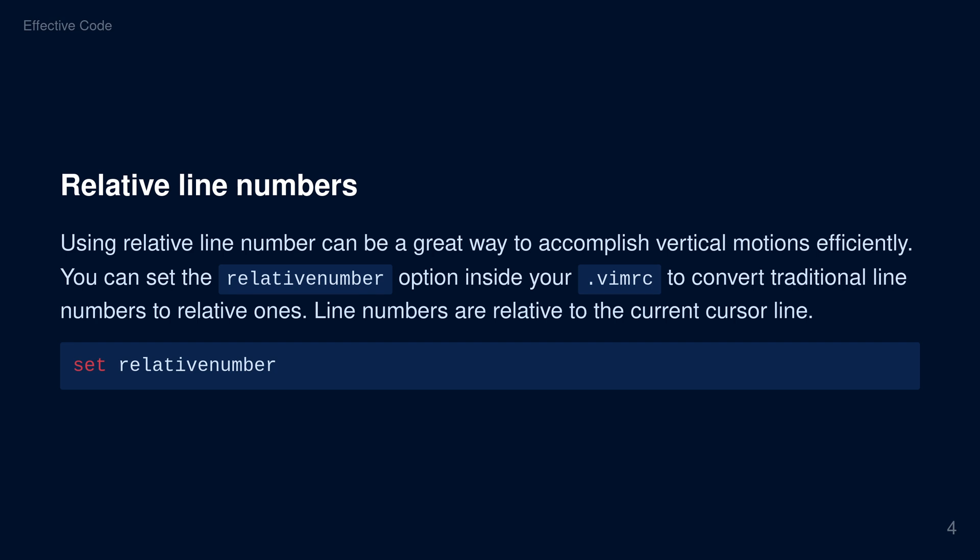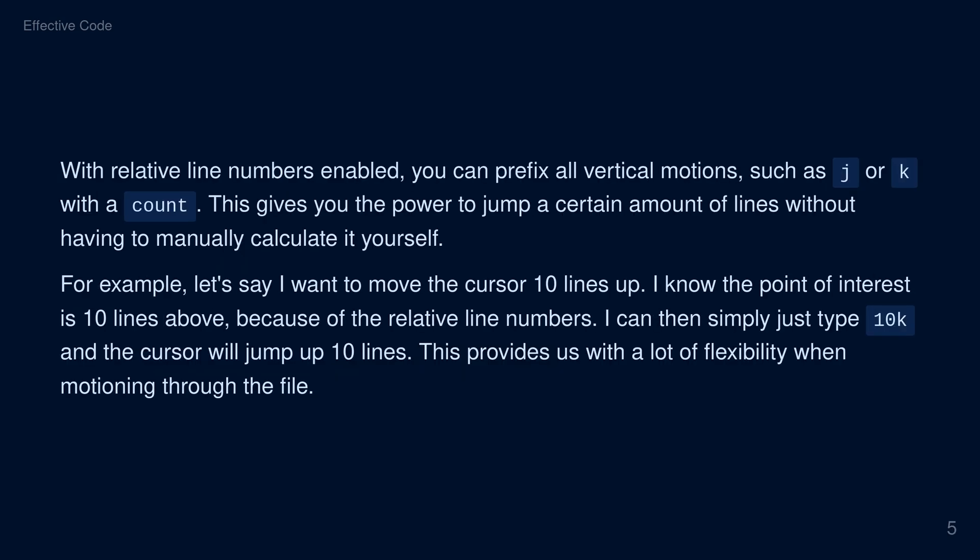With relative line numbers enabled, you can prefix all vertical motions, such as J and K, with a count. This gives you the power to jump a certain amount of lines without having to manually calculate it yourself. For example, let's say I want to move the cursor 10 lines up. I know the point of interest is 10 lines above because of the relative line numbers. I can then simply just type 10 followed by K and the cursor will jump up 10 lines. This provides us with a lot of flexibility when motioning through the file.